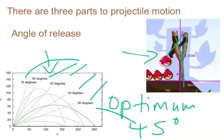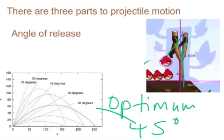So if we're applying it to any throwing events, 45 degrees is our optimum angle of release. That will obviously change depending on the context and what you're trying to do.